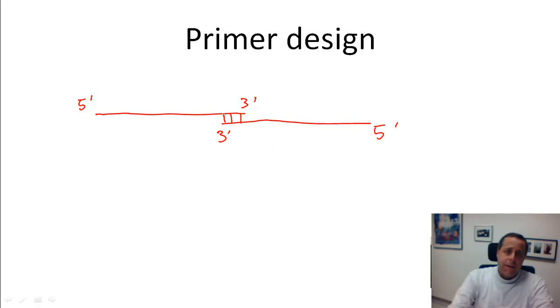What happens is that these ends, these three prime ends of your primers, will find each other because they are complementary. Maybe you have been designing this to be a G and this to be a C, maybe this is now an A, this is a T, and perhaps this is another G and this is another C.